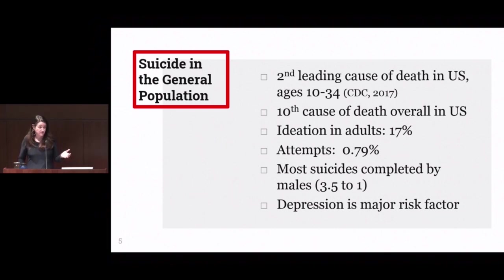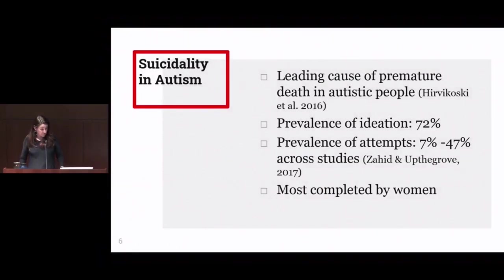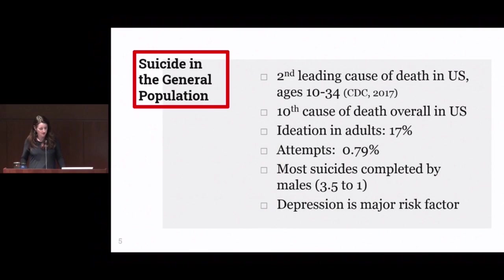In the general population, 17% of adults report the experience of suicidal ideation, and about 0.8% of adults endorse having attempted or completed suicide. Most suicides in the general population are completed by males, with a gender ratio of 3.5 males to every female. Depression is a major risk factor, and hyperactivity or impulsivity is also a major risk factor for completing suicide. In people with autism, suicide is the leading cause of premature death — a result from a large Swedish epidemiological study on adults with autism.